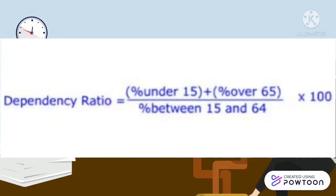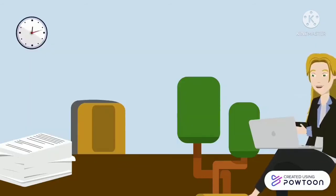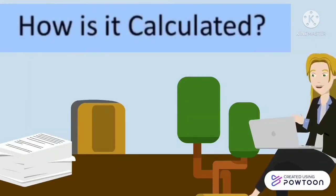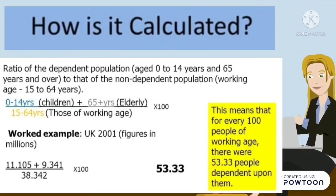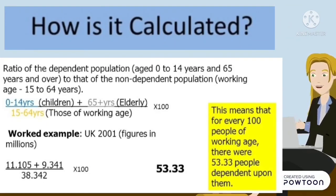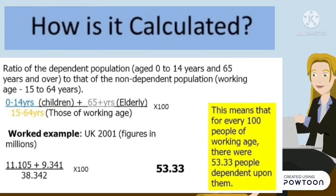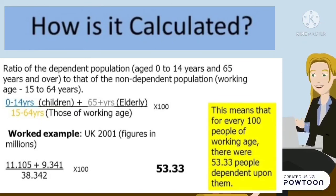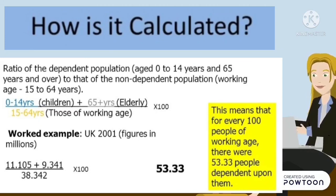The dependency ratio is important because it shows the ratio of the economically inactive compared to the economically active. It is calculated as the ratio of the dependent population aged 0 to 14 and 65 years and over, to the non-dependent working-age population aged 15 to 64 years.